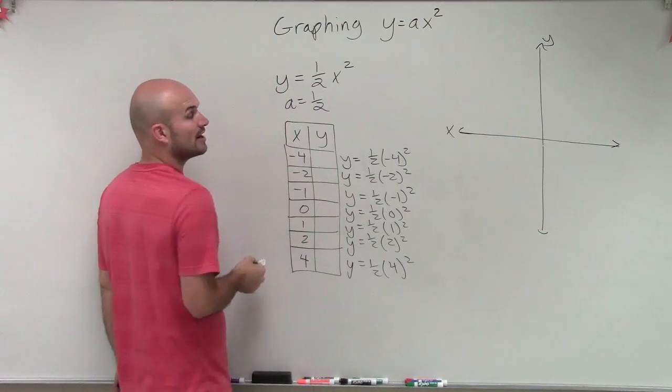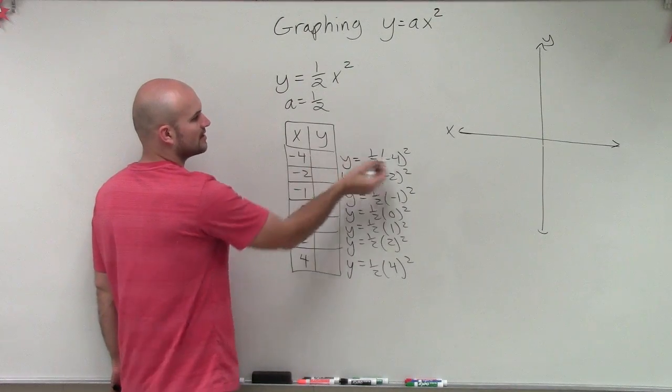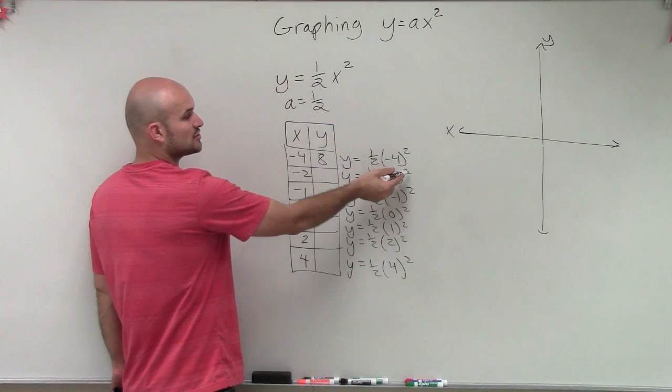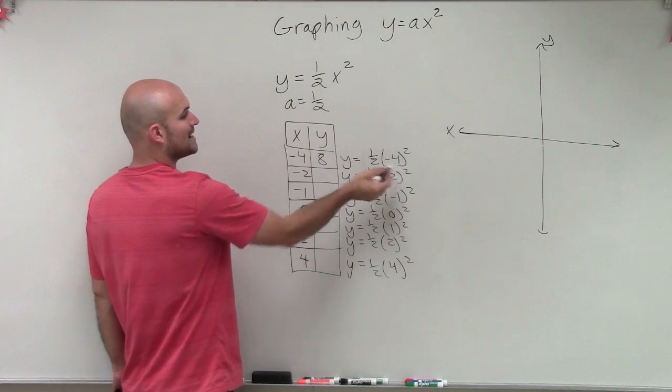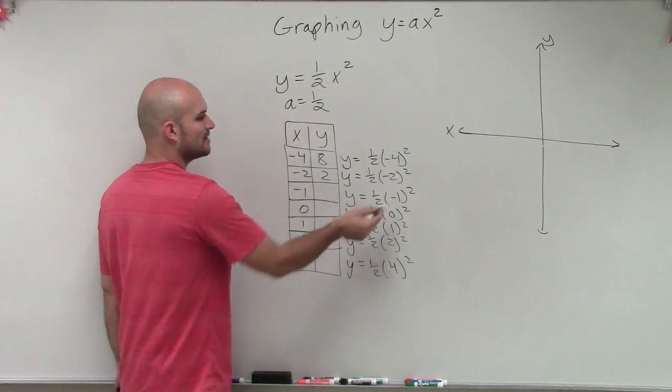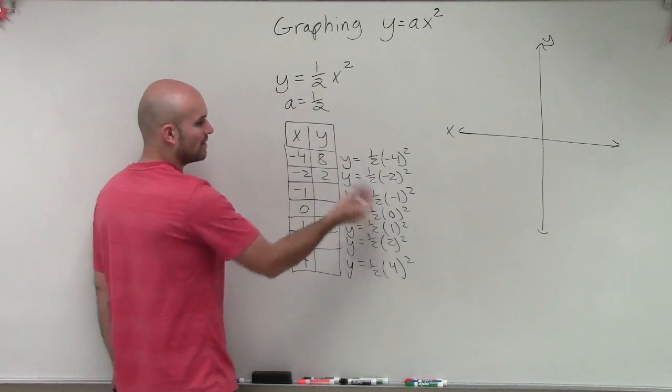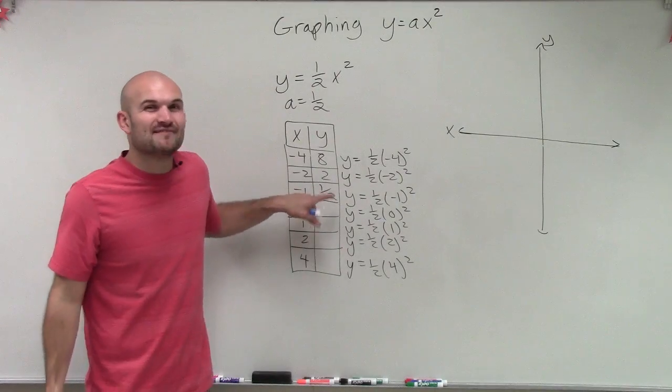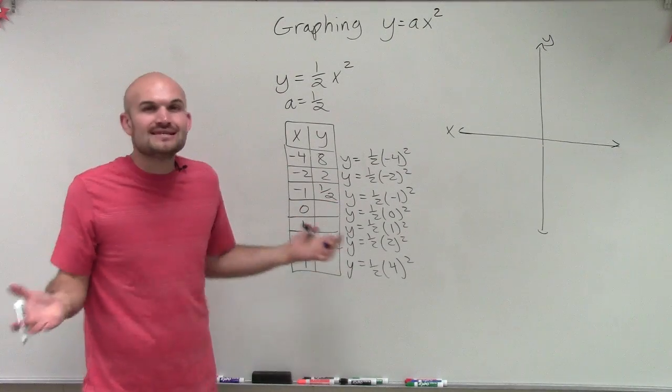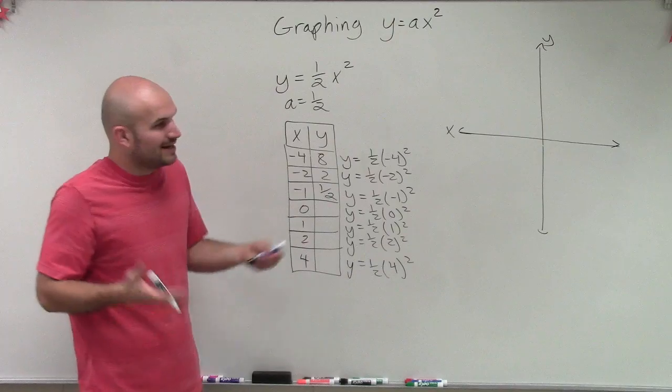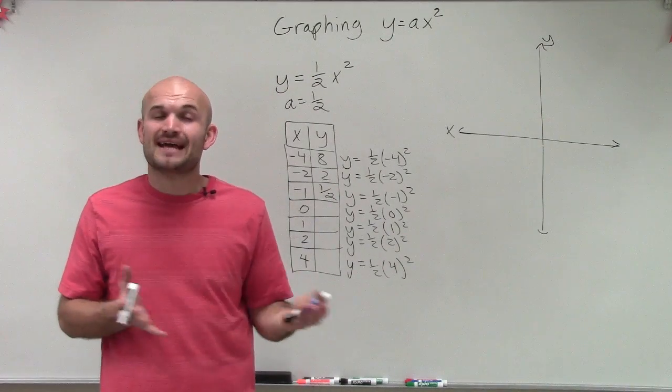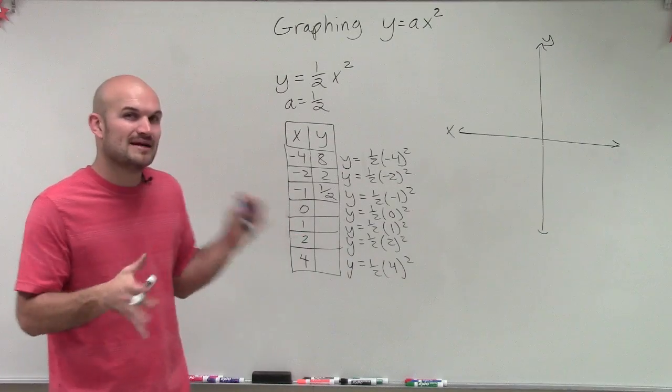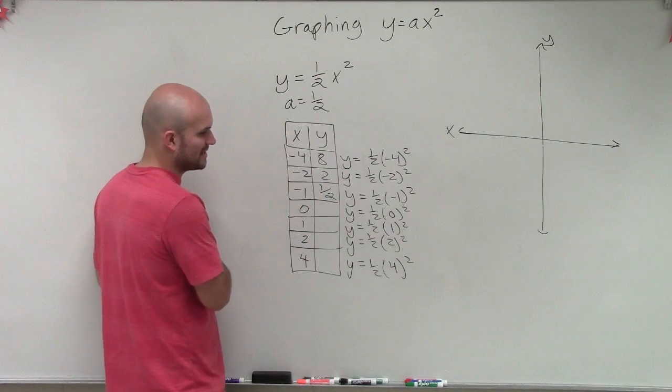So we have negative 4 squared, which is positive 16, 16 times 1 half is positive 8. Here I have negative 2 squared, which is 4, positive 4 times 1 half is 2. Negative 1 squared, which is 1, 1 times 1 half is 1 half. And so you can see by using negative 1, now I'm having to graph a fraction, which it's not bad, there's nothing wrong with it, but a lot of times that's where sometimes mistakes can happen is when we're trying to work with our fractions or decimals. So it's best to use as many whole numbers as we can.